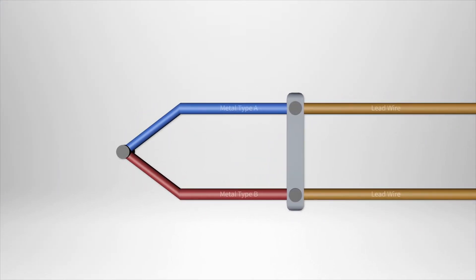A thermocouple consists of two dissimilar metals that are welded together and form two junction points. One junction is placed in the environment that is being measured—this is the hot junction. The other junction remains at a known constant temperature—this is the cold junction.